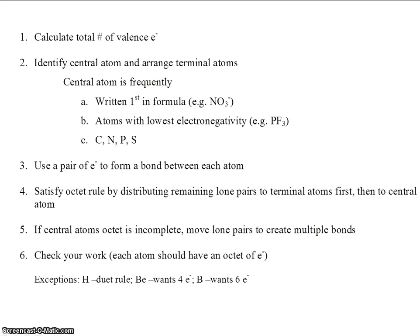Number one: calculate the total number of valence electrons. You'll do this using your periodic table.